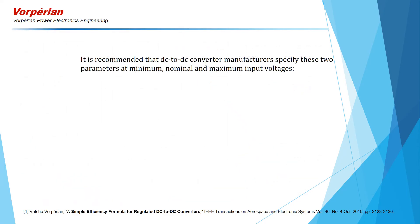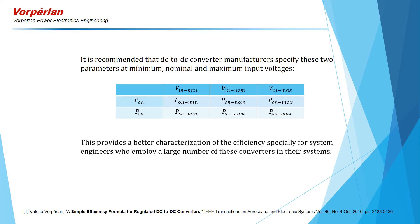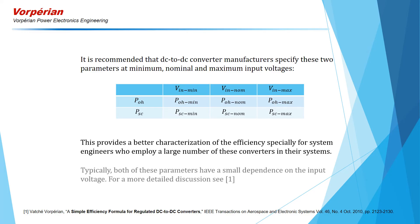Therefore, it is recommended that DC to DC converter manufacturers specify these two parameters at minimum, nominal, and maximum input voltages. This provides a better characterization of the efficiency, especially for system engineers who employ a large number of these converters in their systems. Both of these parameters typically have a small dependence on the input voltage. For a more detailed discussion, see the reference article at the bottom of the screen.